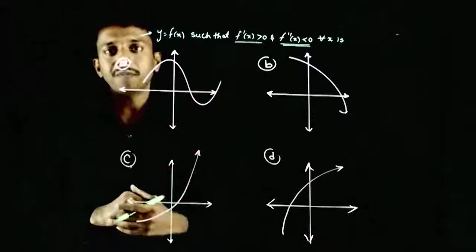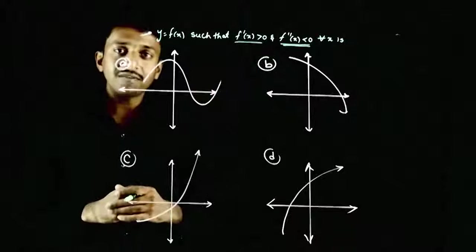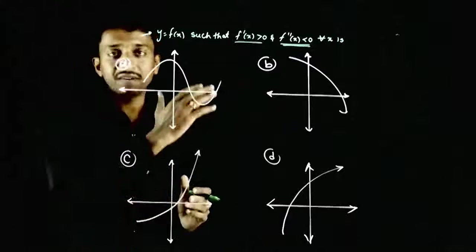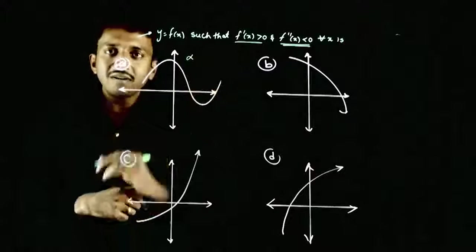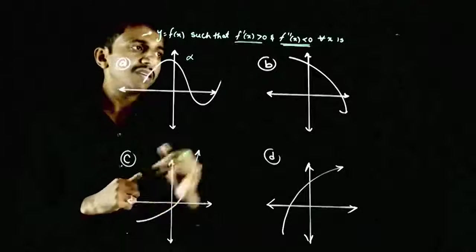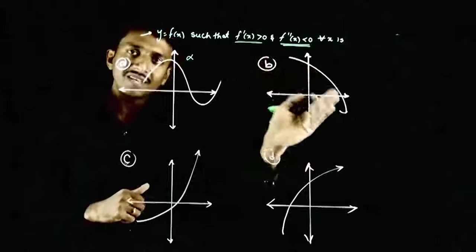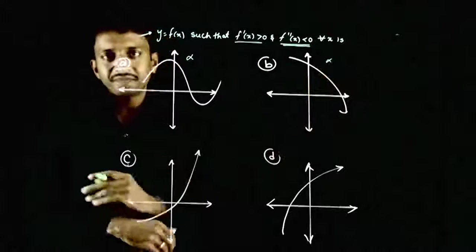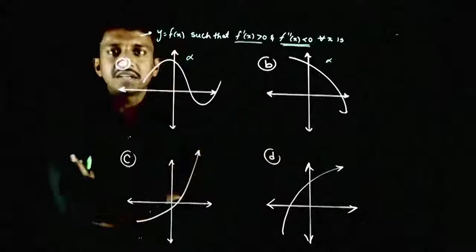f dash of x greater than zero ka matlab hai, the function has to be always increasing. Harbar mera function increase hona chahiye. Obviously, option A is wrong because this function is increasing, decreasing, and increasing. B bhi galath hai because the function is decreasing — that is, f dash of x is less than zero. So C and D are both increasing functions.